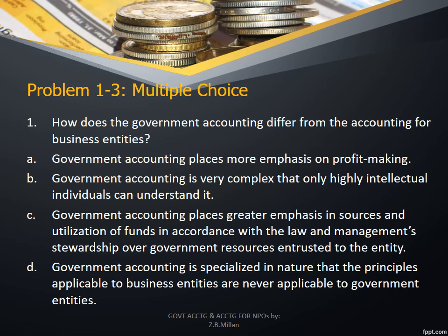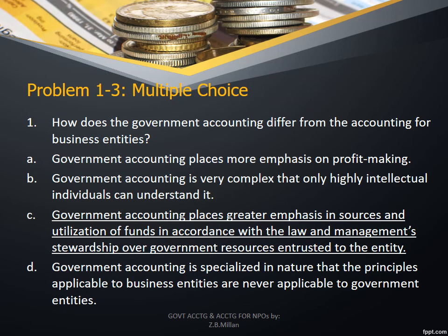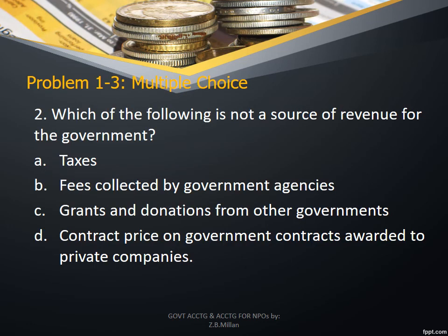Problem 1-3. Number 1: How does government accounting differ from accounting for business entities? Answer: Government accounting places greater emphasis on sources and utilization of funds in accordance with the law and management stewardship over government resources entrusted to the entity. Number 2: Which of the following is not a source of revenue for the government? Answer: Contract price on government contracts awarded to private companies — this is a disbursement rather than a source of funds.